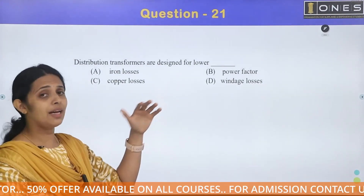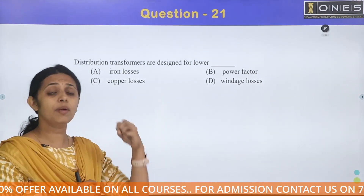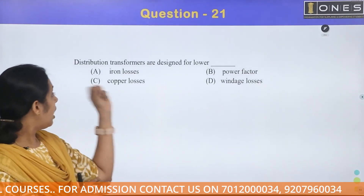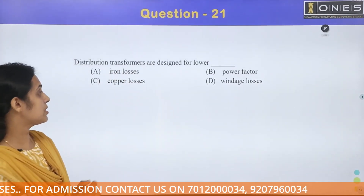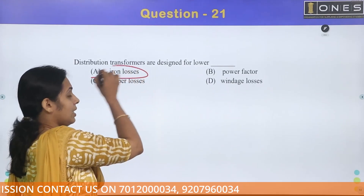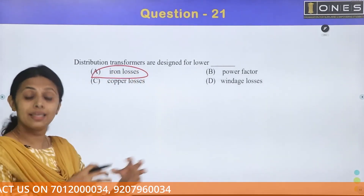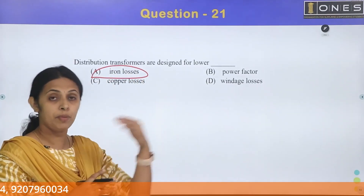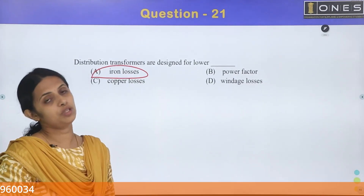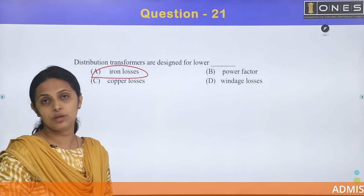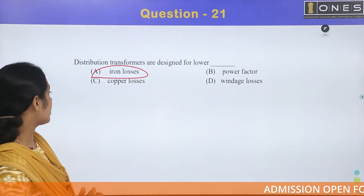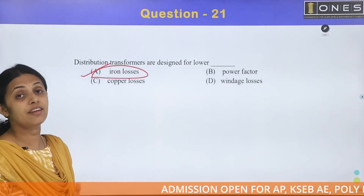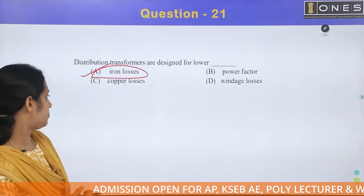Iron loss is designed to be at its lower value. Iron loss is minimized. So, iron loss is the answer. Option A: iron loss. Distribution transformers are designed for lower iron loss.